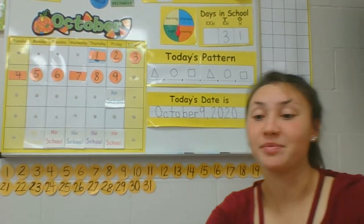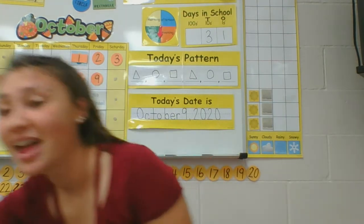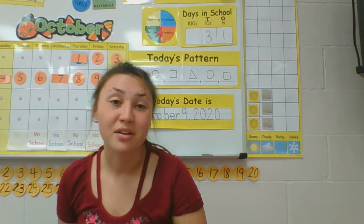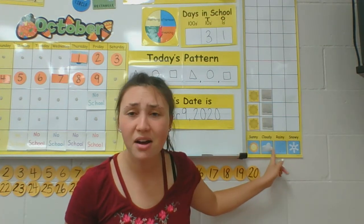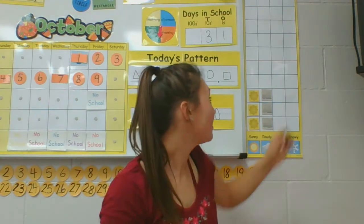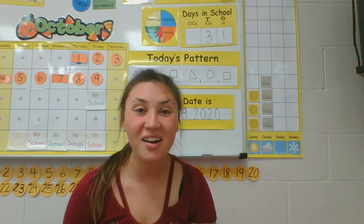Let's move on to the weather for today. Go ahead and look out your window to see what the weather is like by your house. What's the weather? What's the weather like today? Sunny, cloudy, rainy, snowy. What's the weather like today? It's a cloudy, it's a cloudy, it's a cloudy, cloudy day.